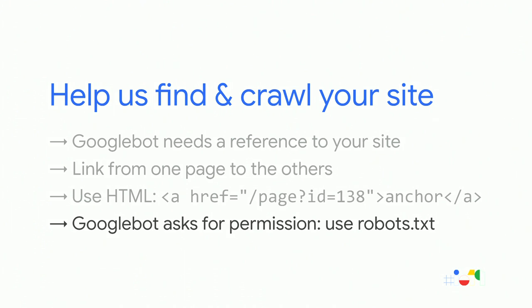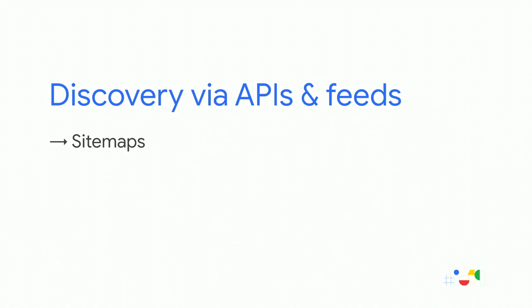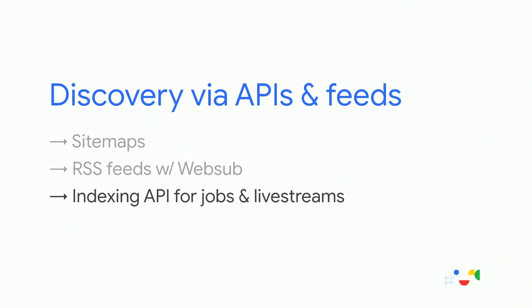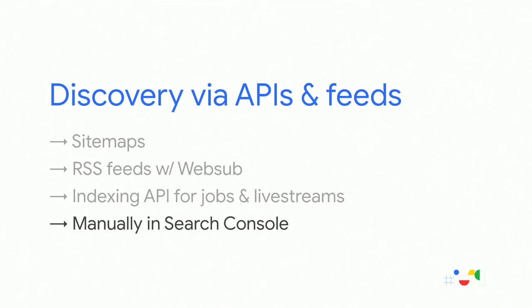Links aren't the only discovery method. You can upload an XML sitemap through Search Console listing all URLs you want Googlebot to discover. If you have RSS feeds, you can use WebSub and we'll crawl your RSS feed entries. For structured data covering jobs and live streams, you can use the Indexing API. And you can always manually submit URLs directly in Search Console.